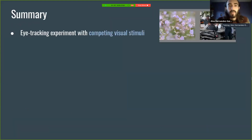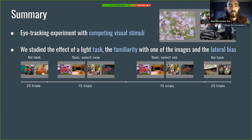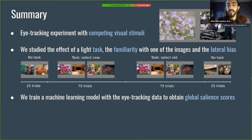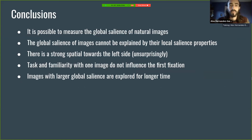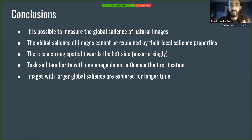As a summary, we performed an eye tracking experiment with competing visual stimuli — pairs of images — and studied the effects of task and familiarity, which I haven't presented today but are available in the paper. We also looked at lateral bias and trained a machine learning model with the eye tracking data to obtain global salience scores. We found that local salience properties don't account for the global salience of natural images. The main conclusion is that it is possible to measure the global salience of natural images that is independent of local saliency, and that there is a strong spatial bias towards the left side. We also found that task and familiarity play little role in explaining global salience, and that images with larger global salience were explored for a longer time.